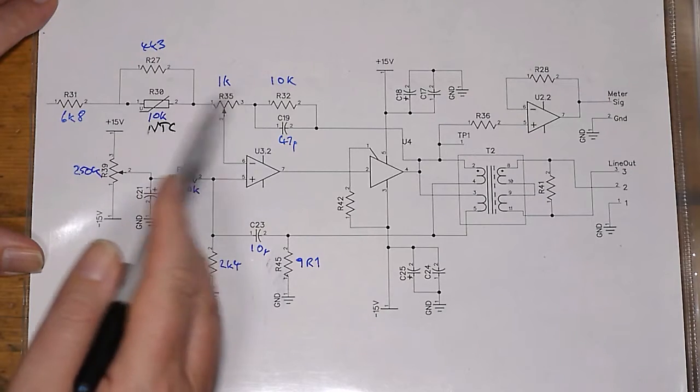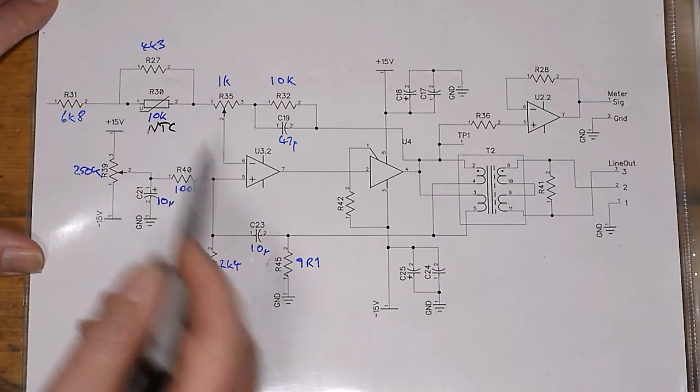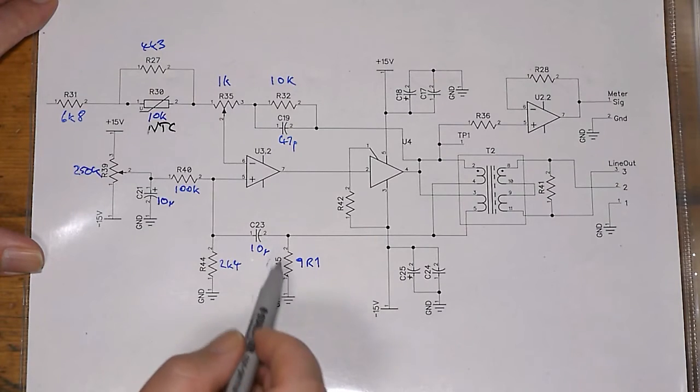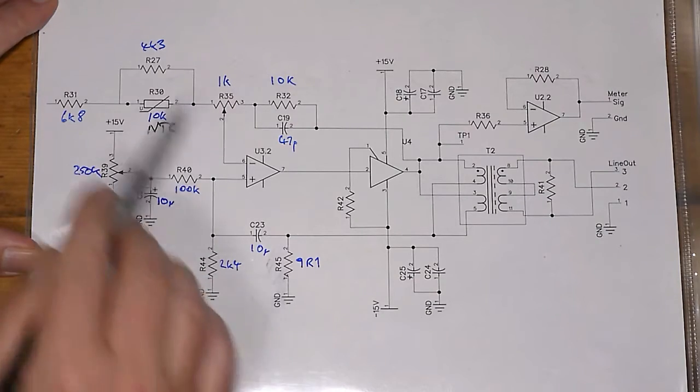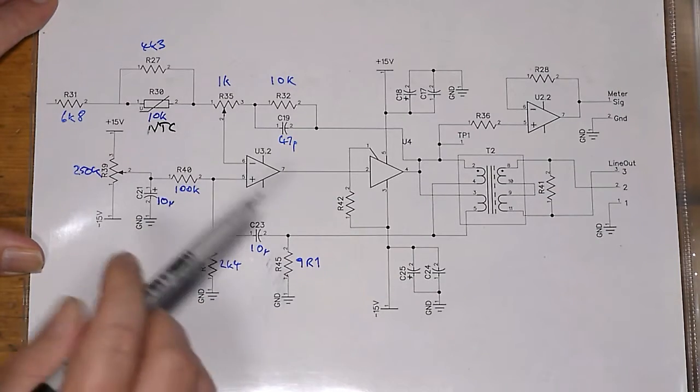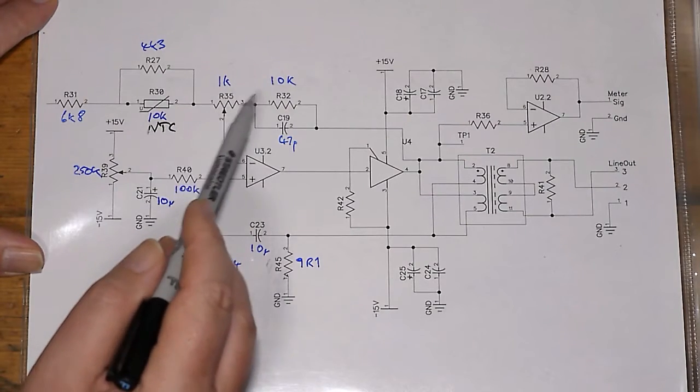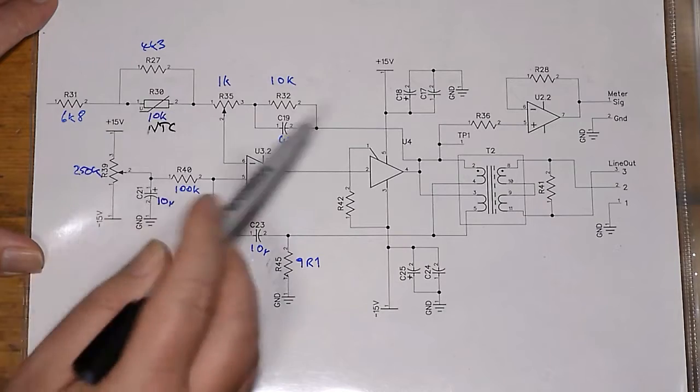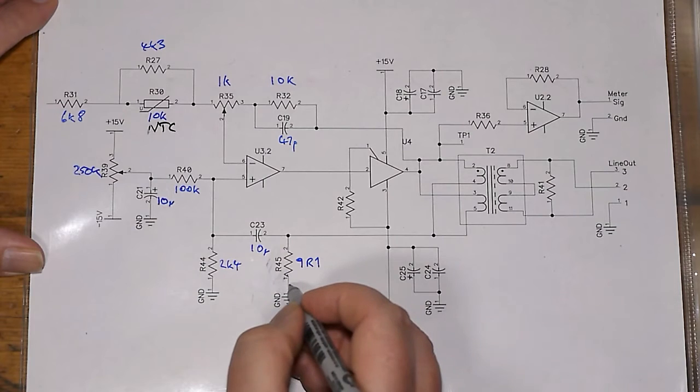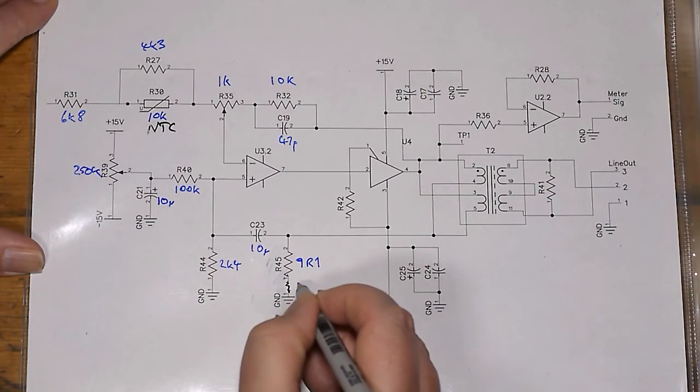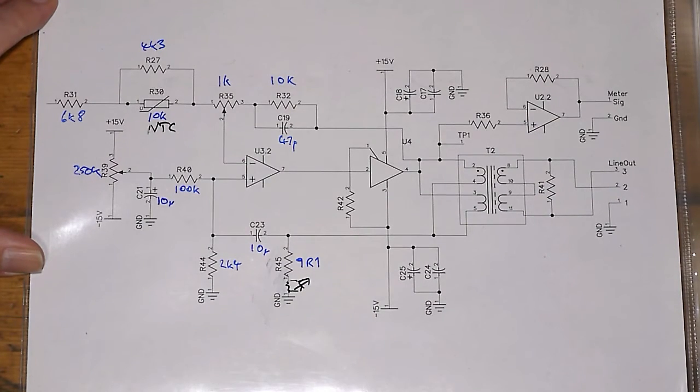We'll desolder R35 and pop in a 2K trimmer and see what we can do. If perchance that's still not giving us enough adjustment, the best approach might well be actually to give us some adjustment here at R45. And I guess my other approach to this, in some ways it might have been a good approach actually, as adjusting this does actually change the temperature compensation somewhat. If I'd actually set up some sort of series parallel arrangement with another trimmer, then I could have done it that way instead. Anyway, let's give it a go.